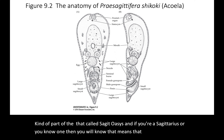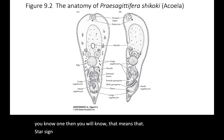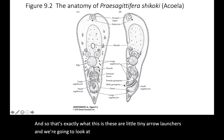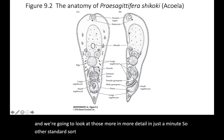If you're a Sagittarius, you'll know that's the star sign with the guy who has a bow and arrow — and that's exactly what these are: little tiny arrow launchers. We're going to look at those in more detail in just a minute.